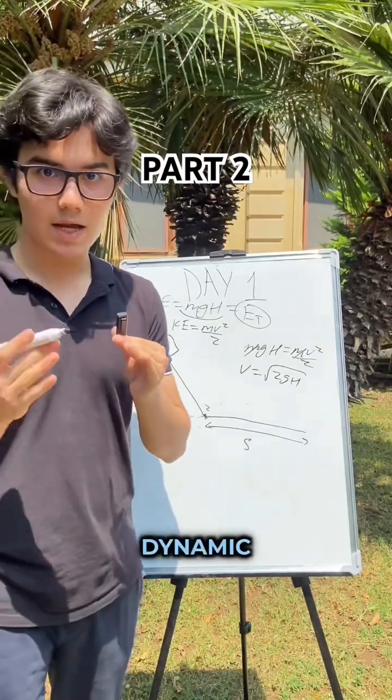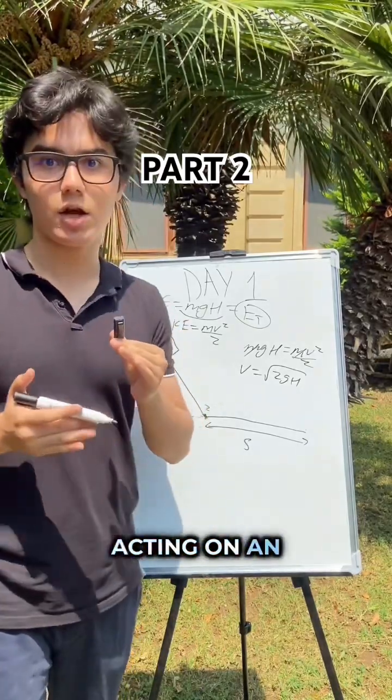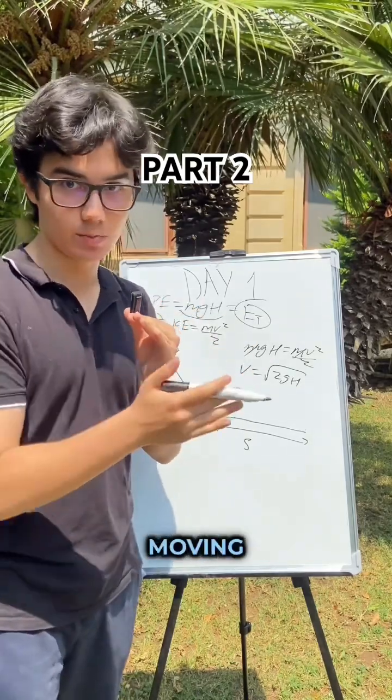This is friction and dynamic friction. Dynamic friction is friction that acts on an object while the object is in motion, so it's moving.